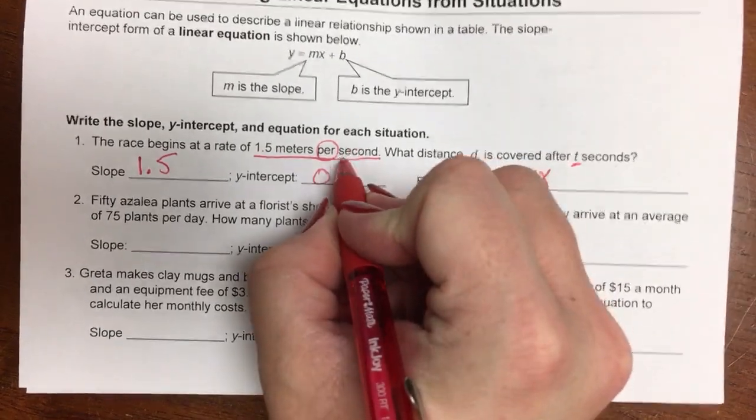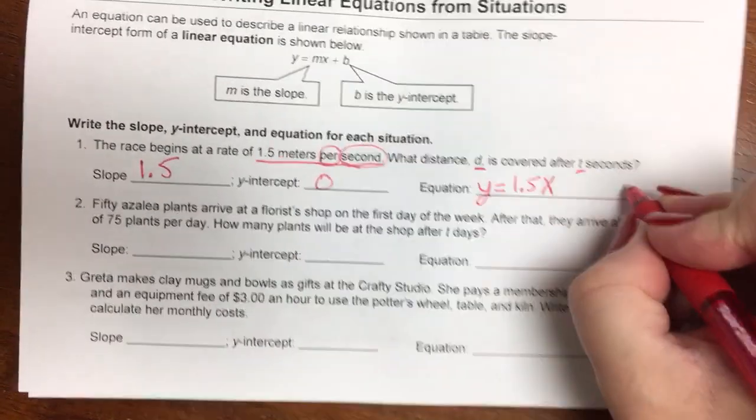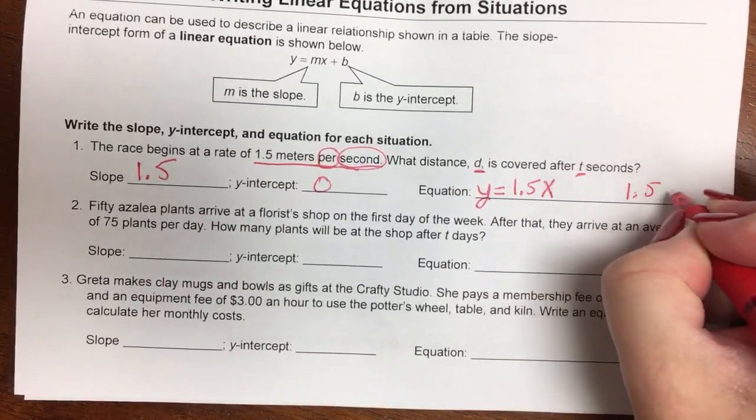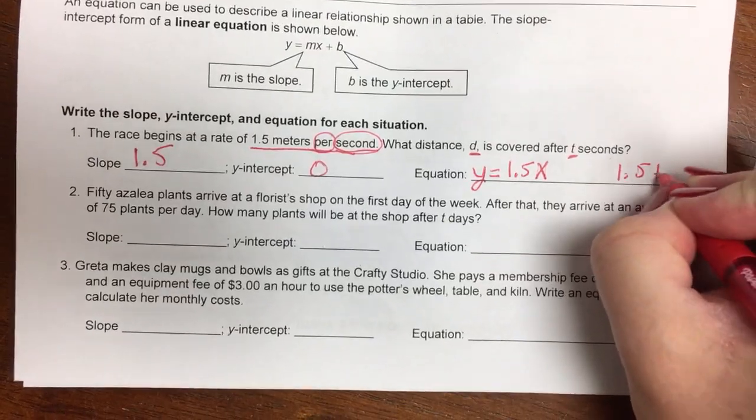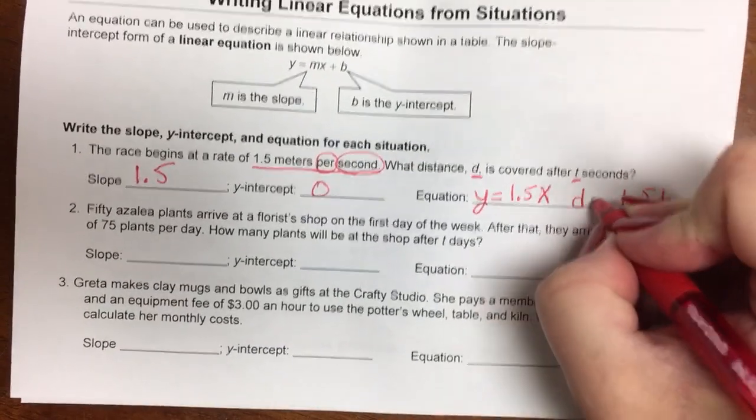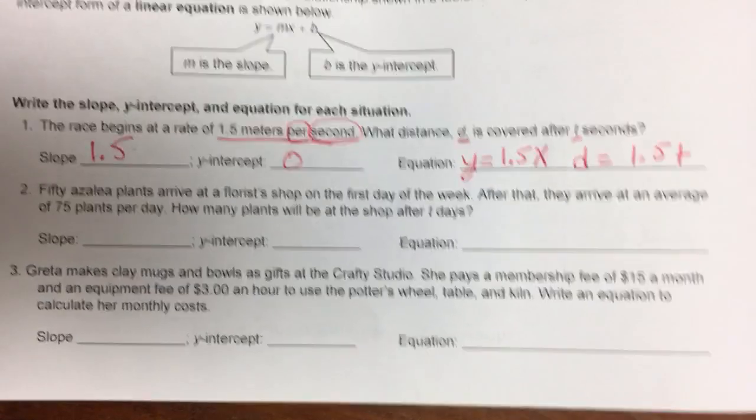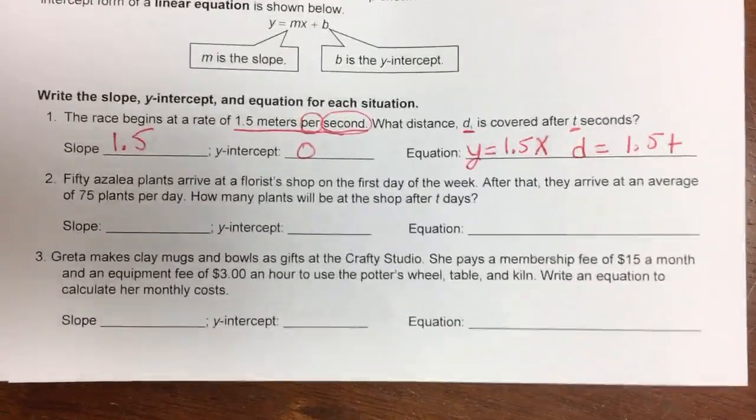Well, here's our seconds. We're multiplying by our seconds. So this would be the 1.5 times t, and that's going to equal to the distance. So they both say the same thing. They're just using different variables.